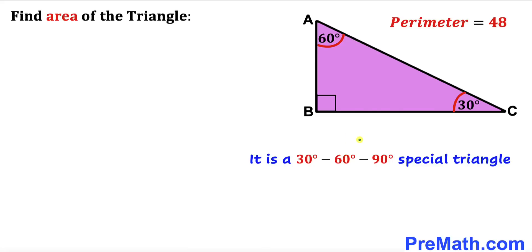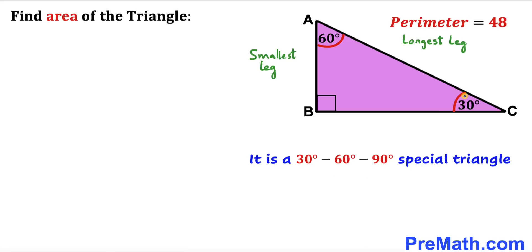Since we are dealing with this special 30-60-90 triangle ABC, we are going to talk about the characteristics of a special 30-60-90 triangle. We can see that 30 degrees is our smallest angle, so the side opposite to this angle is going to be our smallest leg.